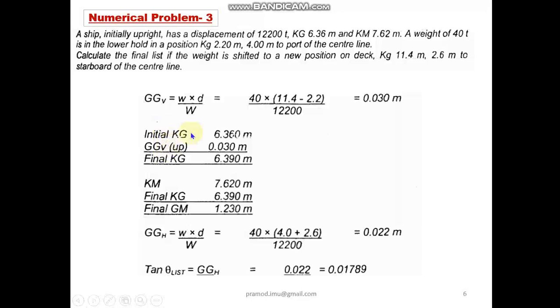It is given in the question, initial KG is 6.36 meters and there is a shift in center of gravity from G to Gv. The shift is 0.03 meters as we have calculated, so your final KG becomes 6.39 meters. If we subtract this final KG from the KM value, which is again given in the question as 7.62 minus the final KG, we will get the final GM value, that is 1.23 meters.